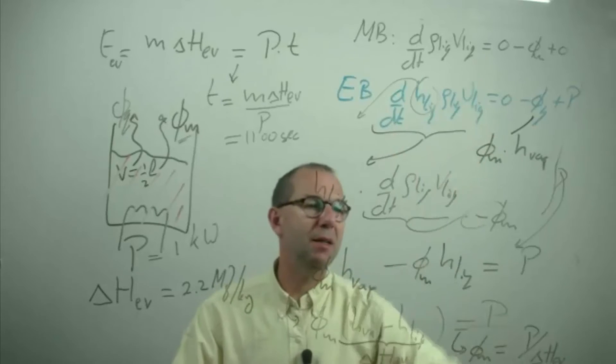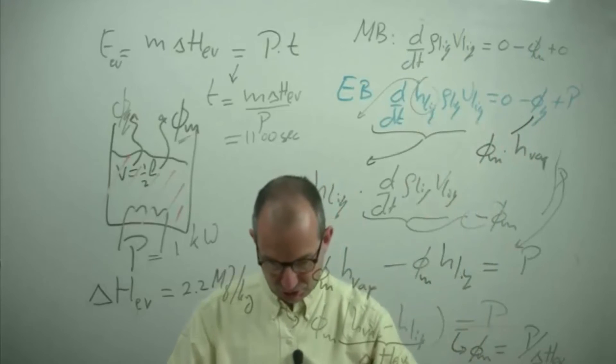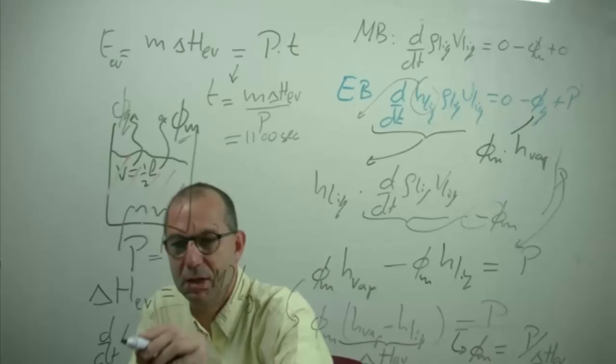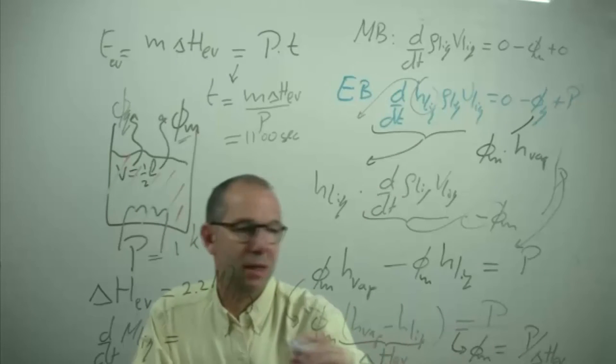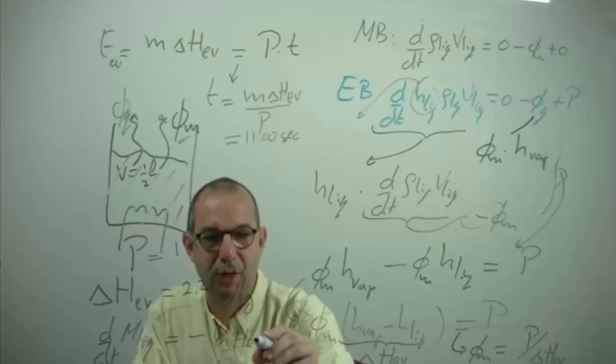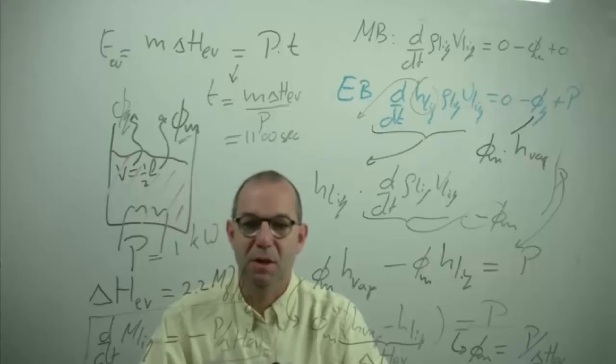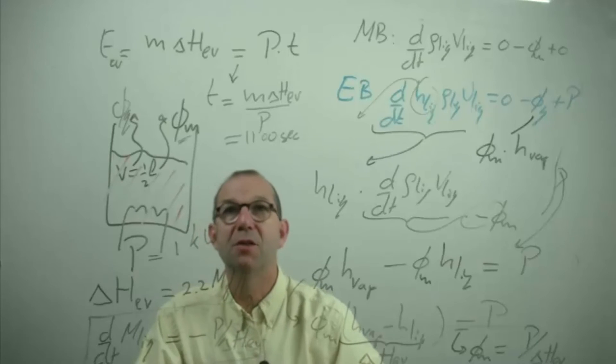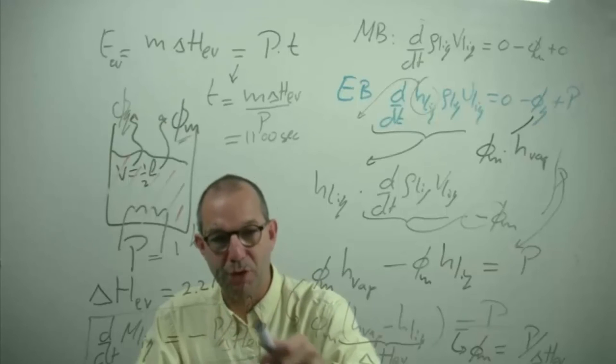Now I can go back to my mass balance because I now have this term and I can equate the change in mass, so I'm going to write that back, the change of the mass of liquid, that's what the balance here said, equals minus P over delta H of ev. This governs evaporation. This is a simple equation that can readily be solved and that turns into that the total mass is changing over time proportional to this number.